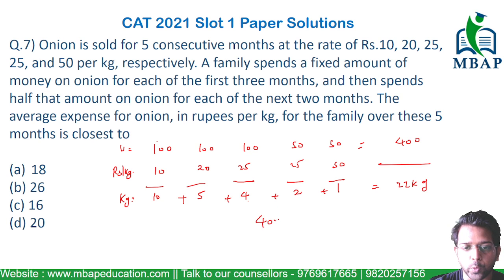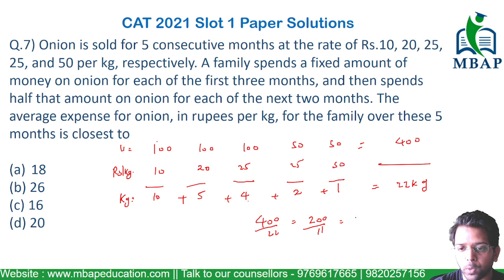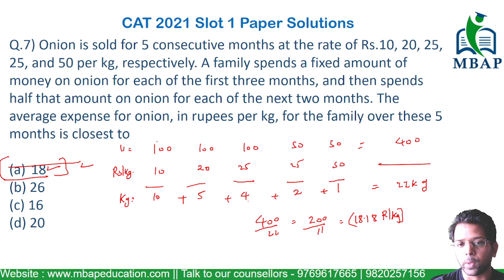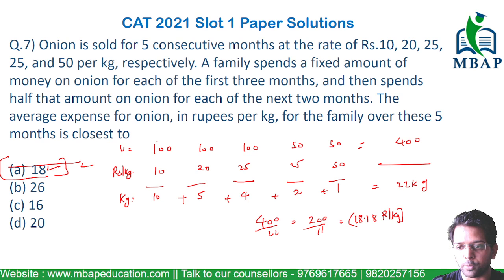So 22 kg of onion was purchased for 400 rupees. The average expense is 400/22, which equals 200/11. Since 100/11 is approximately 9.09, multiplying by 2 gives roughly 18.18 rupees per kg. The closest answer is option A. Quite an easy question!